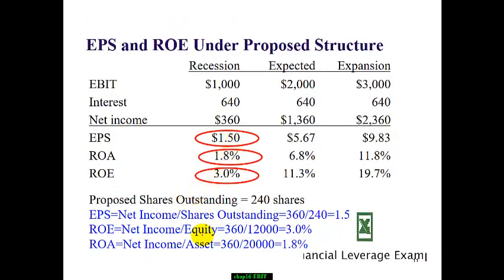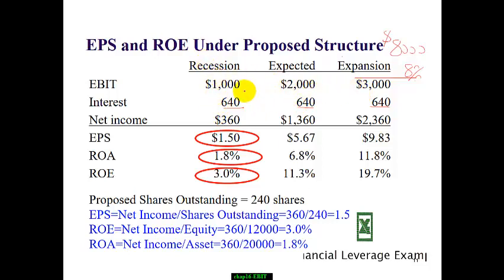Now using the same approach for the proposed capital structure — where we borrow $8,000 at 8% — the interest payment is $640. This is fixed regardless of how much money the company makes. Net income equals EBIT minus interest. So the net income figures are different from the all-equity case under each economic scenario.